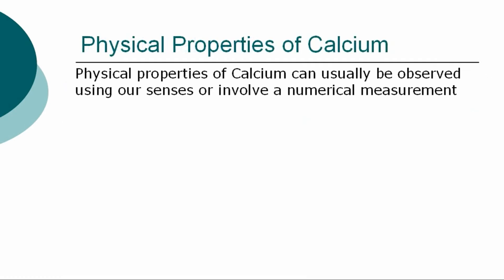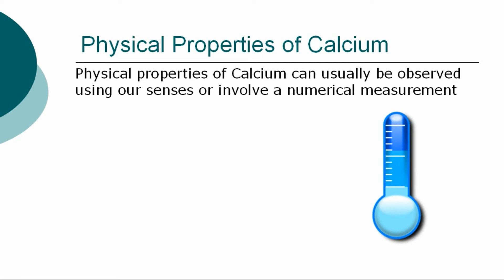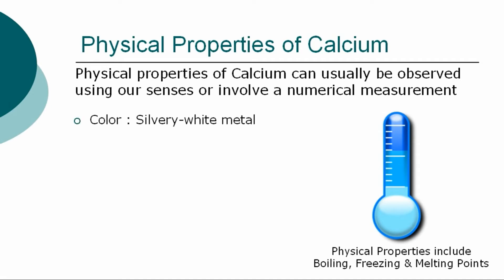The more specific physical properties of calcium can usually be observed using our senses or involve a numerical measurement, such as determining its boiling, freezing, and melting points. The physical properties of calcium are: color — silvery white metal; phase — solid; crystalline structure — cubic.